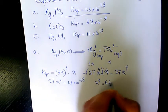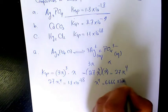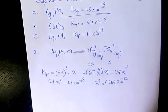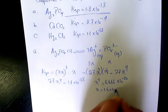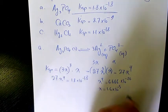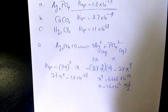That's 6.666 times 10 to the power of negative 20, to the power of 1 over 4. That will be 1.6 times 10 to the power of negative 5 mole per liter.